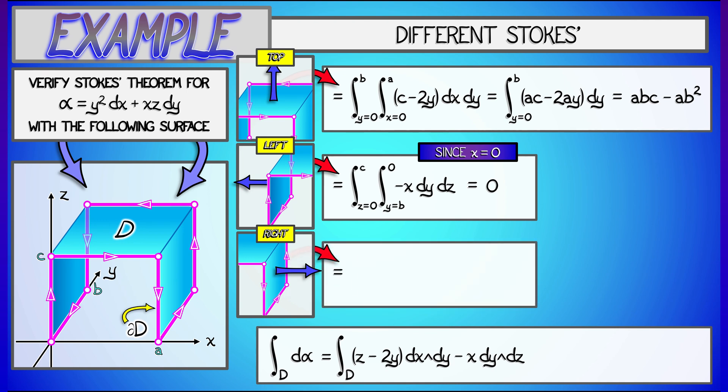Let's do the last remaining piece, that rectangle to the right. This is going to be the integral of minus x dy dz, as y goes from 0 to b, and z goes from 0 to c. Notice how I've been careful with the limits to get the orientation right.